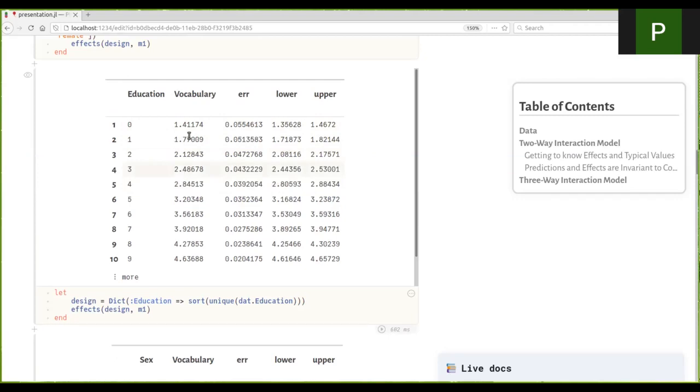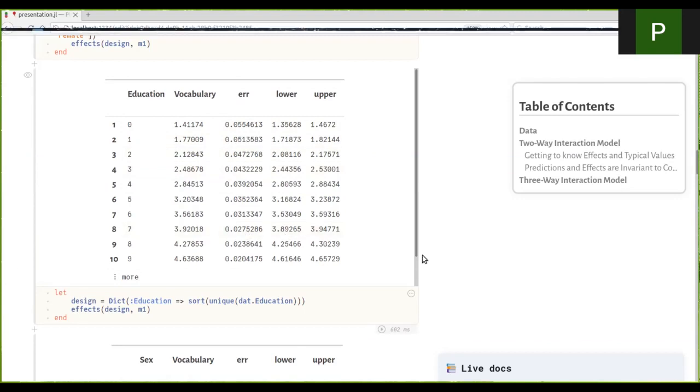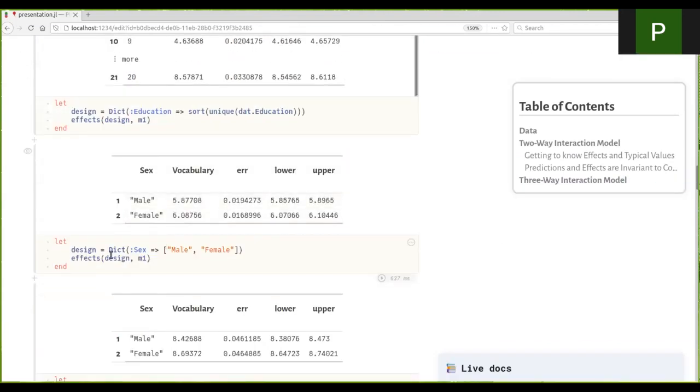We can also go the other way and specify that we only care about the effect of sex, male and female, and then we get these values for the average level of education. You can see here that females at the average level of education, the mean level of education in this dataset, seem to outperform their male counterparts on this vocabulary test.